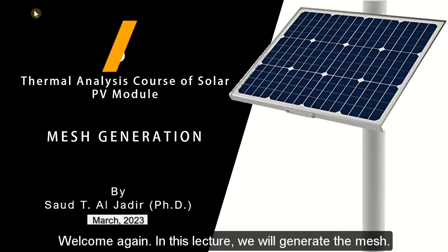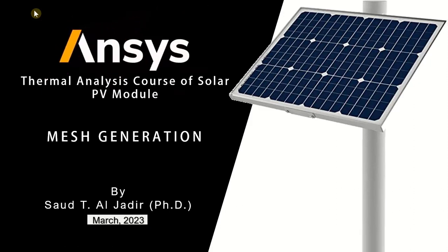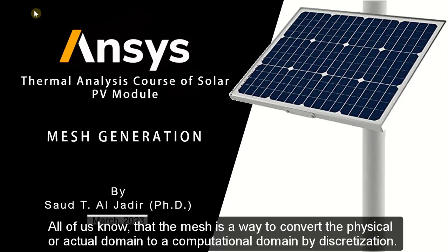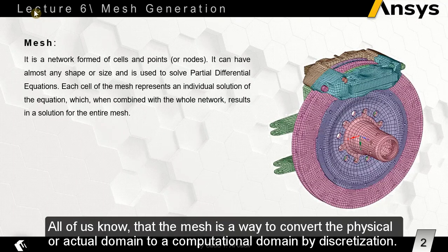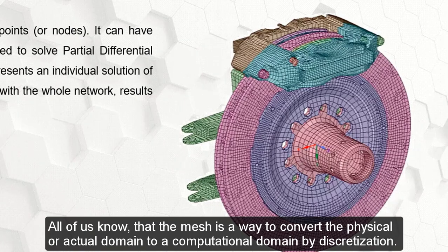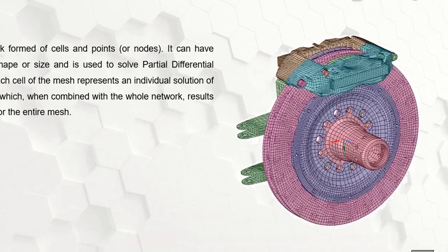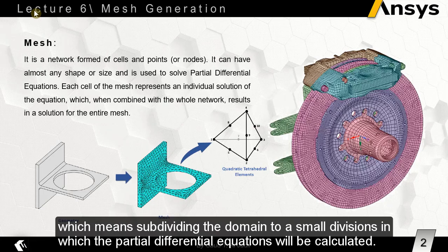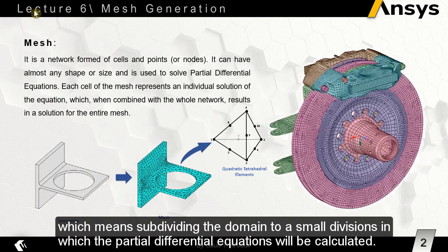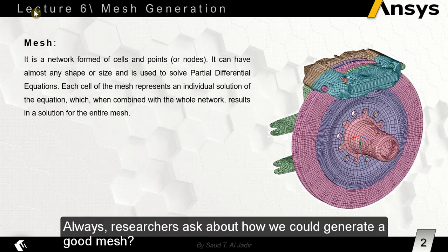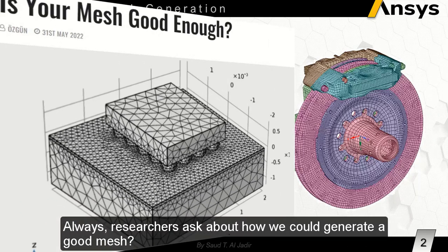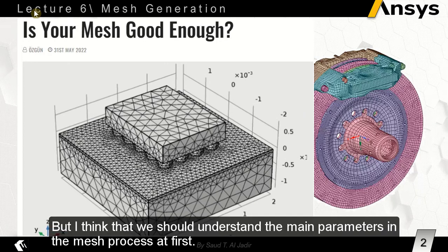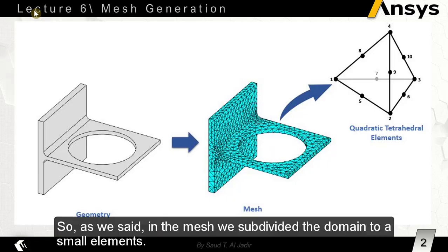Welcome again. In this lecture we will generate the mesh. The mesh is a way to convert the physical or actual domain to a computational domain by discretization, which means subdividing the domain into small divisions in which the partial differential equations will be calculated. Researchers always ask how we could generate a good mesh, but we should first understand the main parameters in the mesh process.